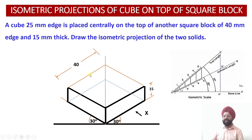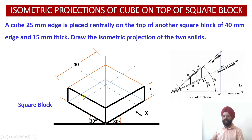We did not darken the remaining two edges because a cube with edge length equal to 25 mm is going to be rested centrally on the top face. This is the top face of the square block. At the center point, I find the midpoint of one edge and the midpoint of the opposite edge, and join them to get a center line. Similarly, the other two edges of the top face are bisected, and joining those midpoints allows me to locate the center of the top face of the square block.